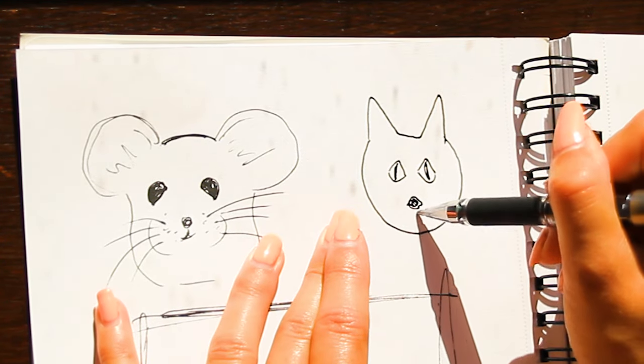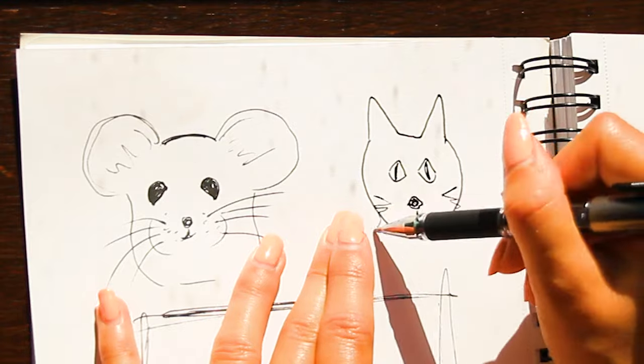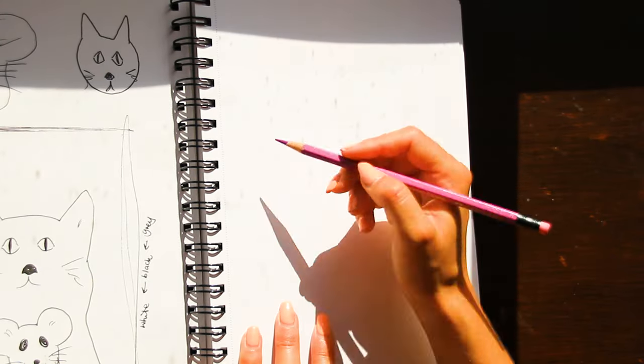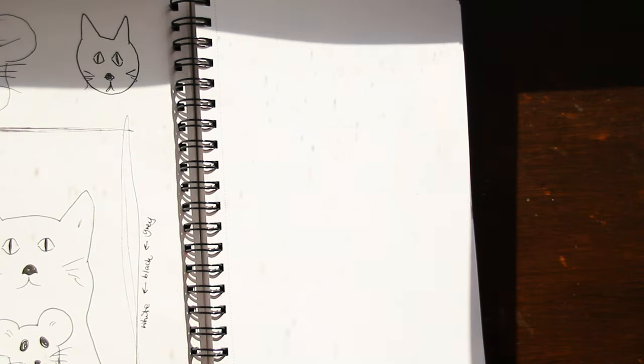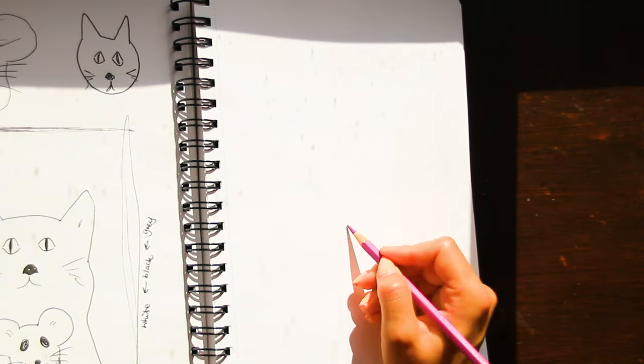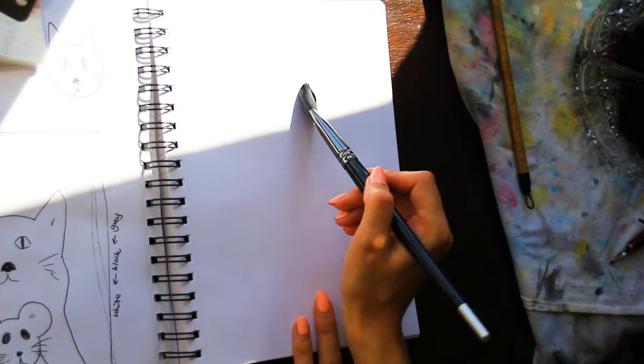But I wanted to try and get some different shades out of the ink today. So the idea was to have a really clear distinction between the background, the cat and then the mouse and I thought that would kind of represent scurry quite well.